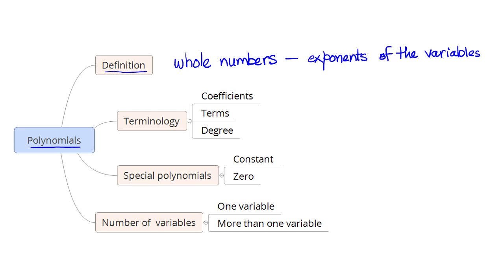If we take the example of an algebraic expression x³ - x² + x + 20, and we look at the exponents of the variable x, we have x to the power 3, x to the power 2, and x to the power 1. This is a polynomial because all these powers — 3, 2, and 1 — are whole numbers.